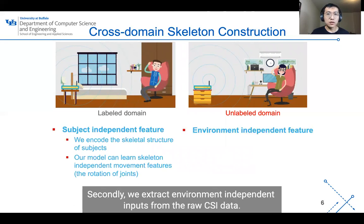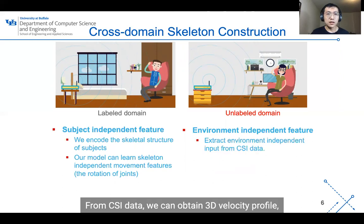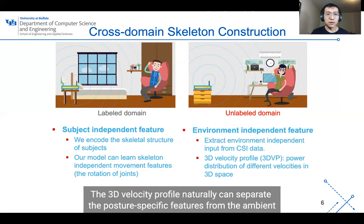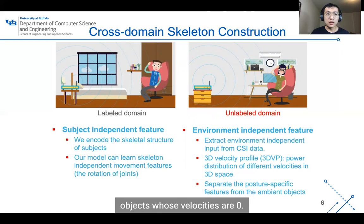Secondly, we extract environment-independent inputs from raw CSI data. For CSI data, we can obtain a 3D velocity profile, which captures the power distribution of different velocities using the Doppler effect. The 3D velocity profile naturally separates the posture-specific features from ambient objects whose velocities are zero.